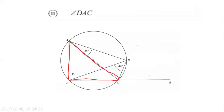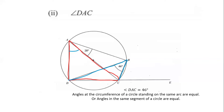These are the two angles standing on that arc — the one in red and the one in blue. Since they are equal, and the angle BDC is 46 degrees, then angle DAC is also 46 degrees. The reason is that angles at the circumference of a circle standing on the same arc are equal, so this 46 degrees equals this 46 degrees here.